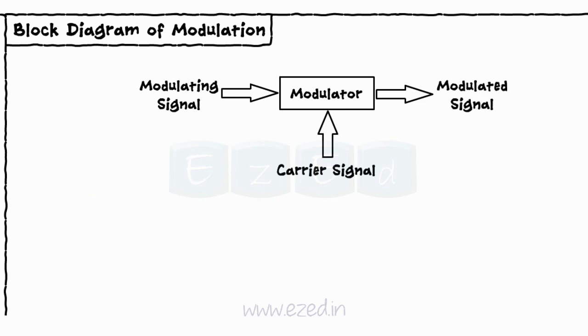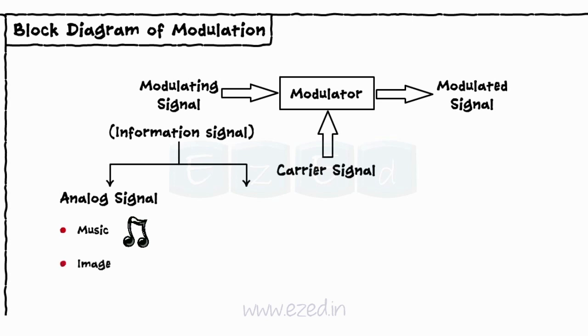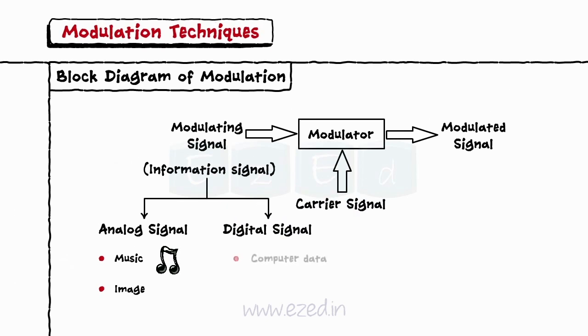Modulating signal is nothing but the information signal. This modulating signal is primarily of two forms as analog signal such as music, image, etc., and digital signal such as computer data.